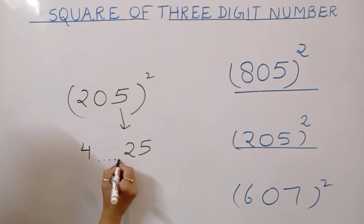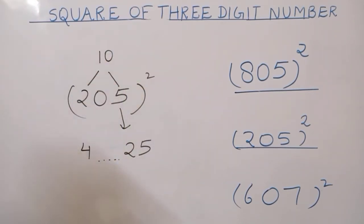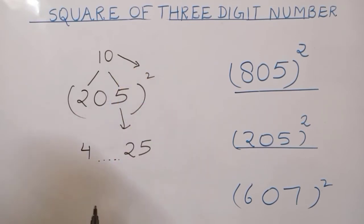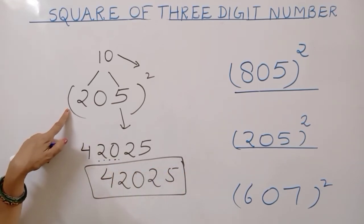Now check about this number. Multiply these numbers, 2 multiply 5, 10. And 10 multiply with this power, 10 multiply 2, 20. So, your answer 42025. Square of 205.